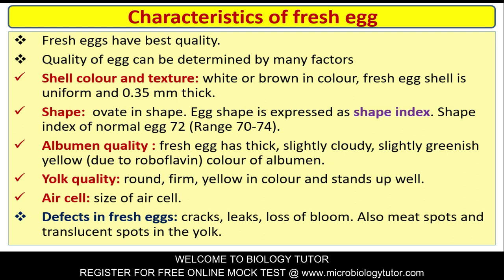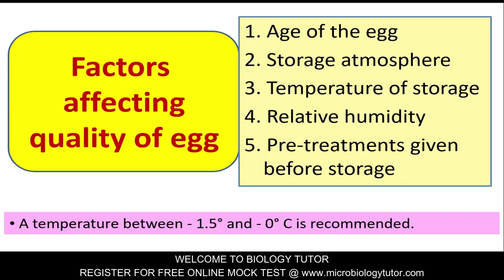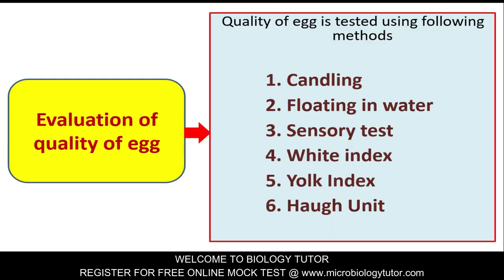Factors affecting quality of eggs are: age of the egg, storage atmosphere, temperature of storage, relative humidity, and pre-treatments given before storage. A temperature between -1.5 degrees and 0 degrees Celsius is recommended for storage.